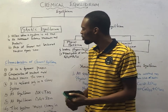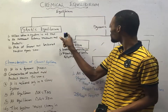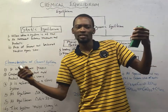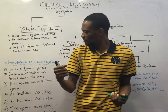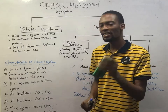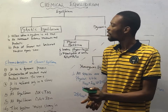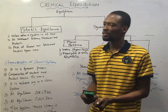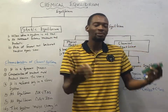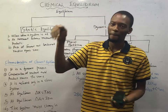The characteristics of chemical equilibrium are: it is a dynamic process — reactants are being converted to products, and forward and backward reactions are taking place at the same rate. The concentration of reactants and products remains the same. It is achieved only in a closed system. When the system is open to the atmosphere, the products may not be able to return to the reactant state.